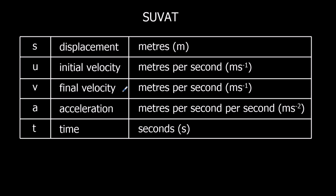V is the final velocity, also in meters per second. A is the acceleration, which is in meters per second per second, or meters per second squared. And T is time measured in seconds.